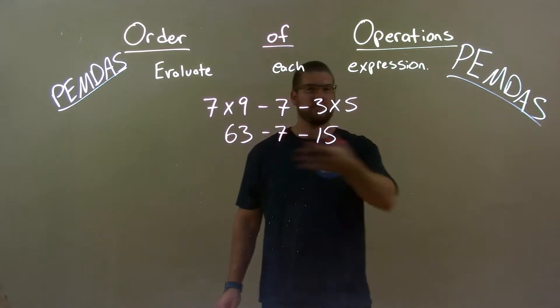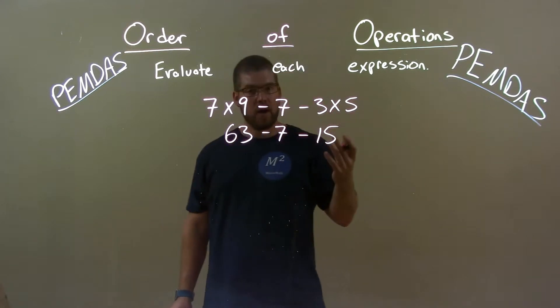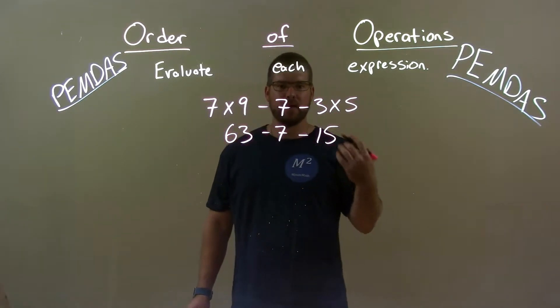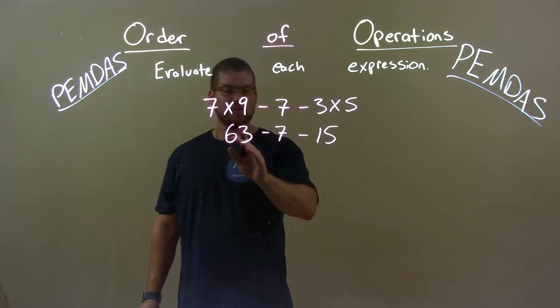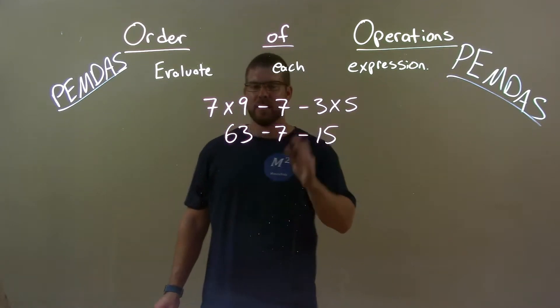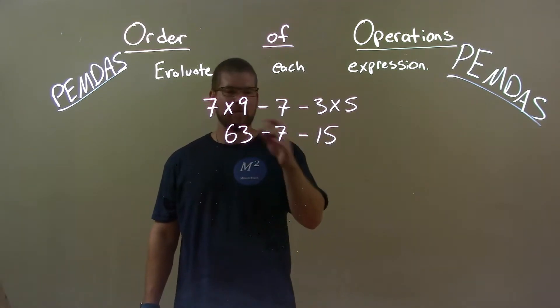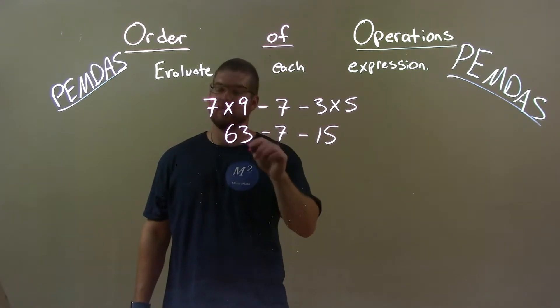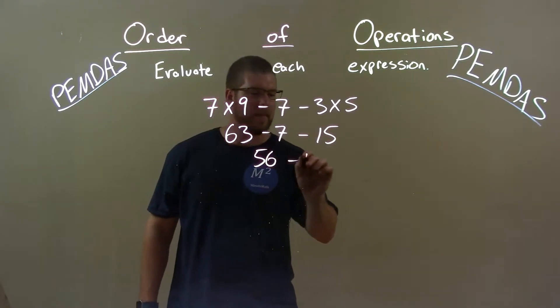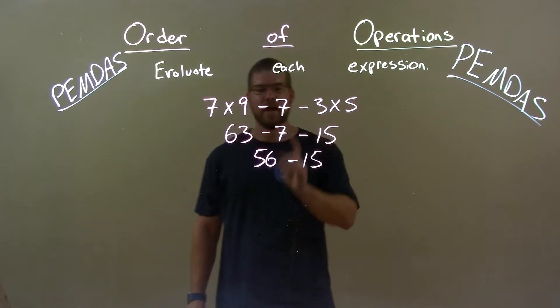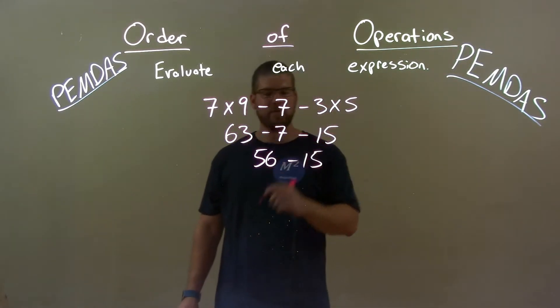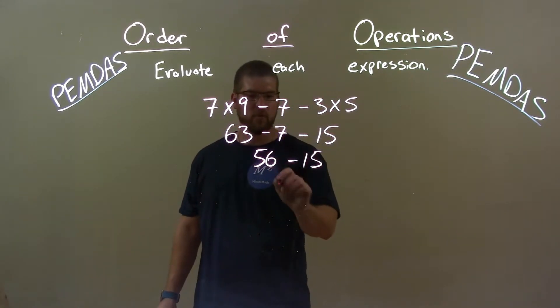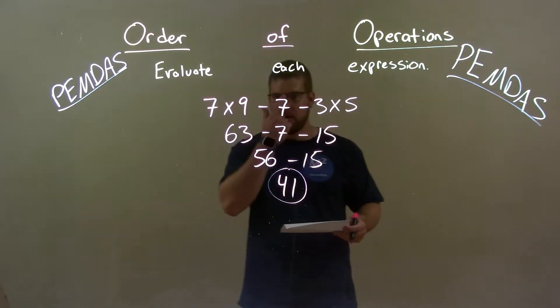Now we have subtraction across the board. So be careful. Let's read left to right here. It's all subtraction. So that 63 minus 7 comes out to be 56. So 56 here minus 15. Now 56 minus 15 is 41 and so our final answer here is just 41.